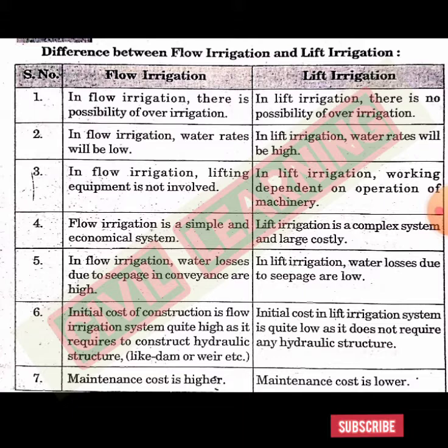Number three: in flow irrigation, lifting equipment is not involved because it is horizontal movement of water, so lifting equipment is not needed. In case of lift irrigation, working is dependent on the operation of machinery, as machinery is used to lift the water.